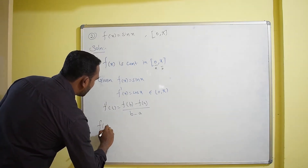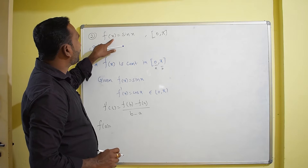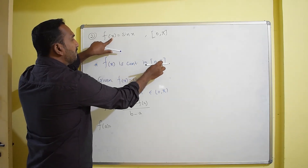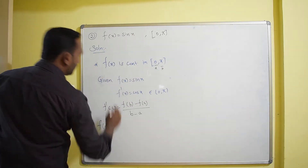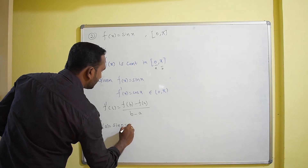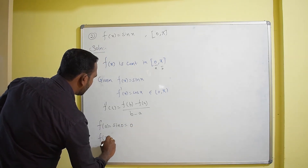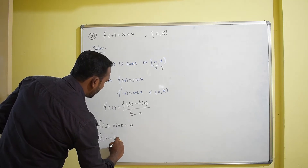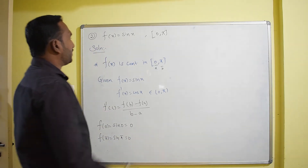Now we find f(a) and f(b). Substituting the endpoints into f(x) = sin x: f(0) = sin 0 = 0, and f(π) = sin π = 0. We now have all the values to substitute into the formula.